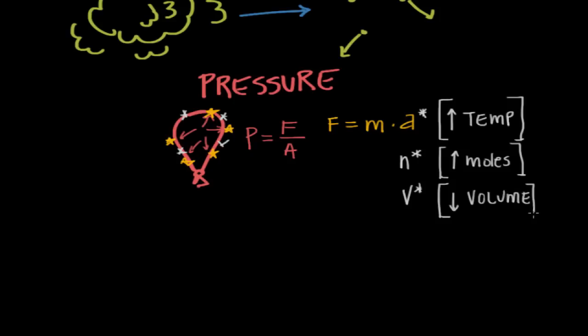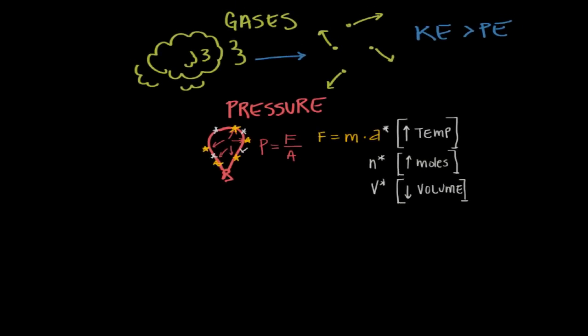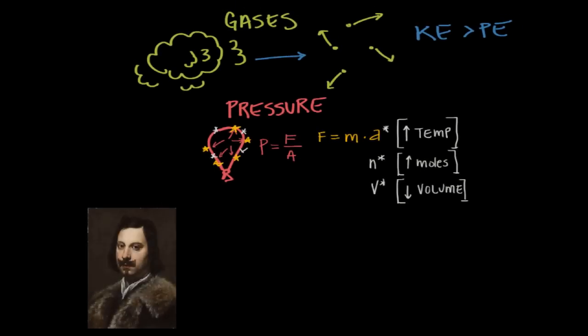So we can change the pressure of a gas, but how do we measure those changes? Well, a long time ago, in 1643, a former student of Galileo named Evangelista Torricelli asked the same question while he was trying to measure the changing pressure of the gas in our atmosphere.